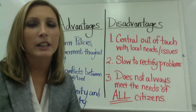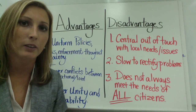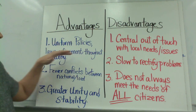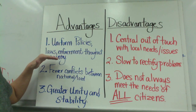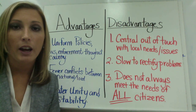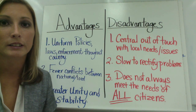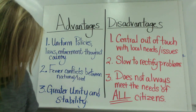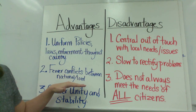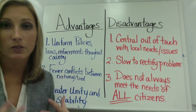There are advantages and disadvantages to a unitary form of government — we'll cover briefly just three of each. For advantages: first, uniform policies, laws, and enforcement throughout the country, such as in the UK where uniform policies are distributed through Wales, Northern Ireland, England, and Scotland. Second, fewer conflicts between national and local levels. Third, a greater unity and sense of stability.